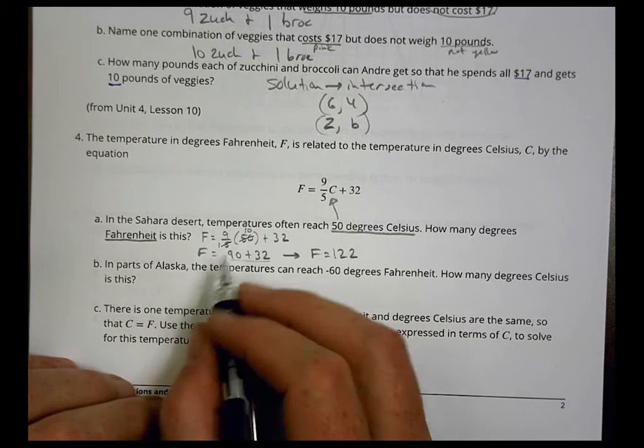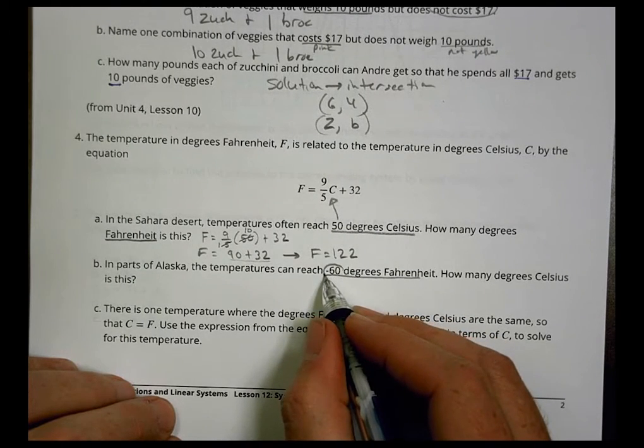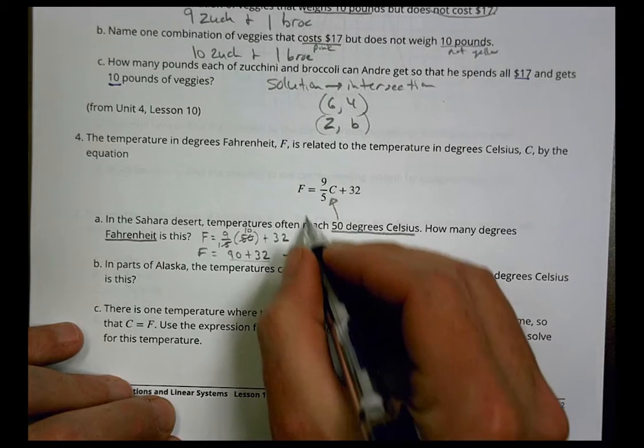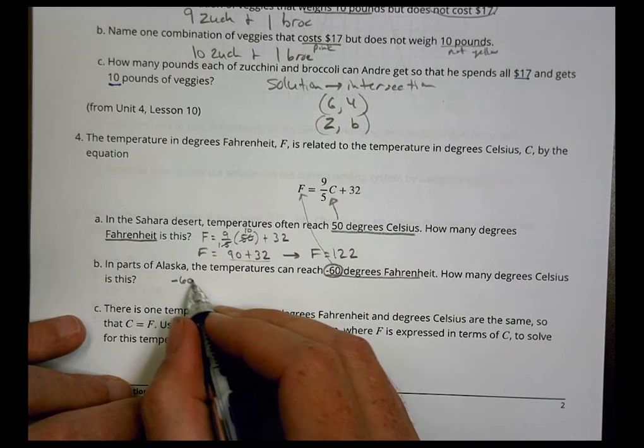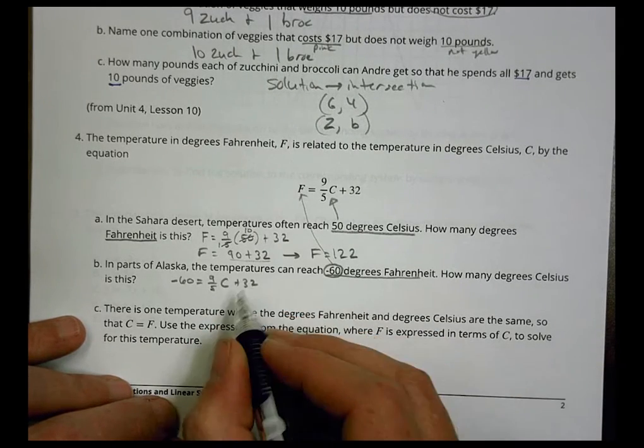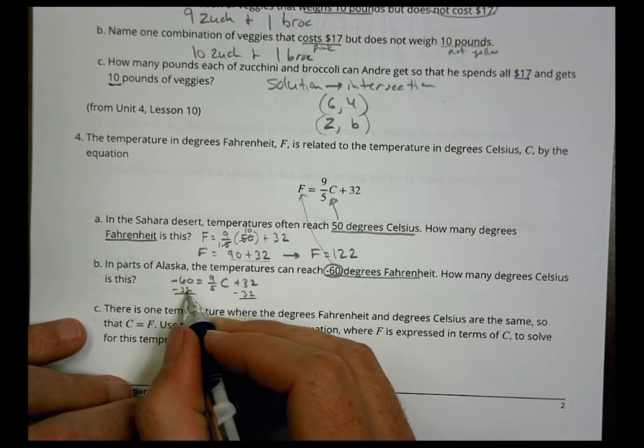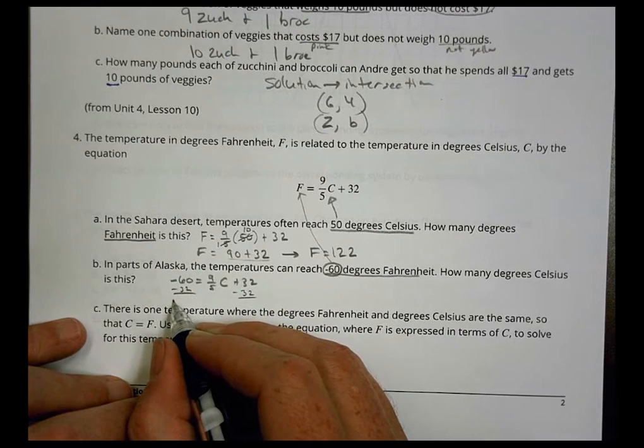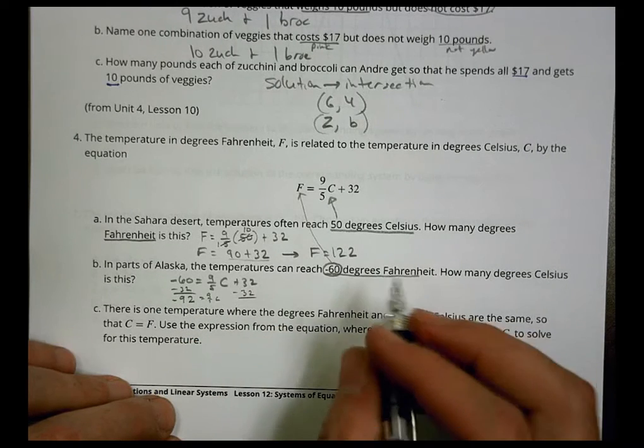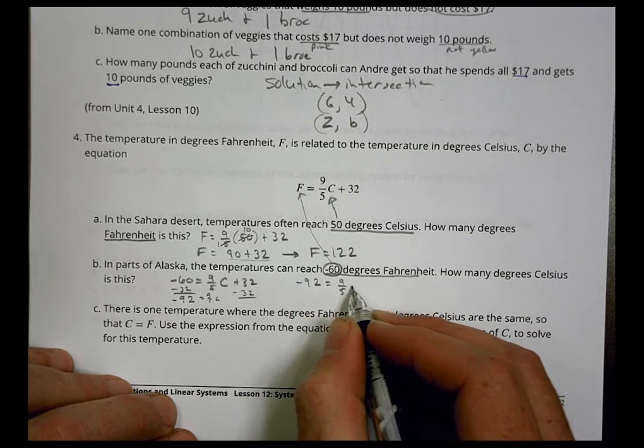Next one, the opposite way. In parts of Alaska, temperature can reach negative 60 degrees Fahrenheit. Make sure you notice that negative sign right there. How many degrees Celsius is this? In this case, our setup, because we're going to plug this into the F part, would be negative 60 equals 9/5 C plus 32. The first step I would take would be to subtract 32 from both sides. So negative 60 minus 32 is going to be a total of minus 92. Negative 92 is going to equal 9/5 C.